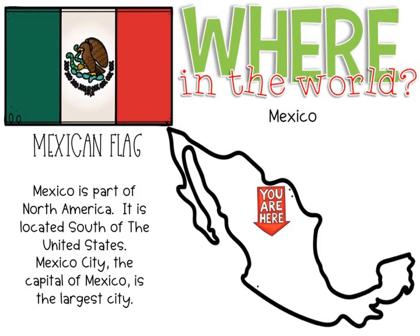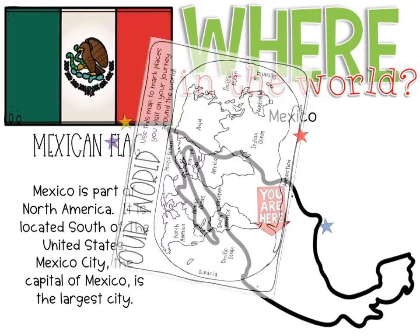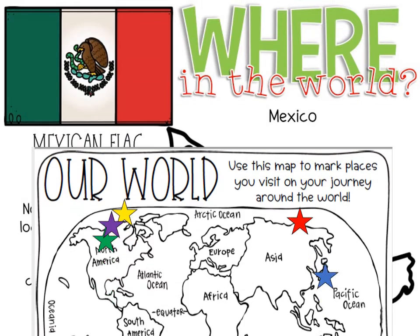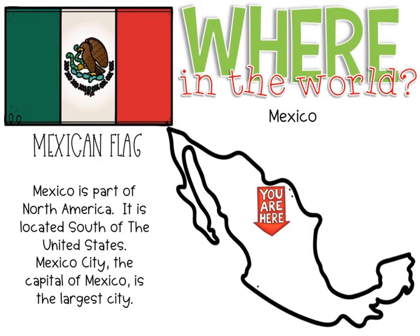We're here — this is the country of Mexico. But where in the world is that on our map? We just left America, where the purple star is, and we're headed here to Mexico, where the green star is. So be sure to mark that on your map. The Mexican flag has a green bar on the side, white in the middle, and a red bar on the other side. Be sure to color in the correct colors on your flag on your scrapbook page.